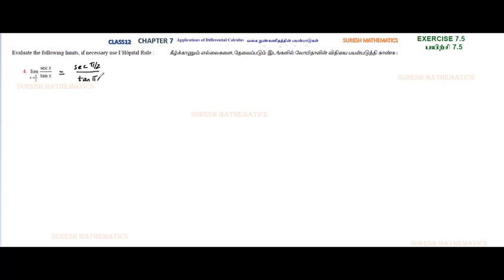Limit apply panna. So secant pi by 2 is cos 90's reciprocal. Cos 90 is 0, so 0's reciprocal is infinity. So secant pi by 2 is reciprocal of cos pi by 2, which is infinity. Tan 90 is also infinity. So we have infinity by infinity form, which is an indeterminate form.